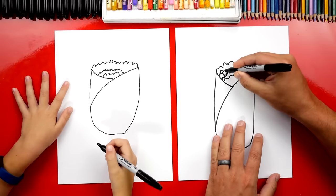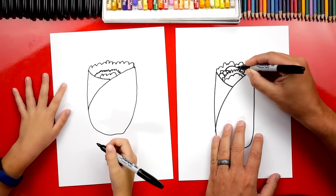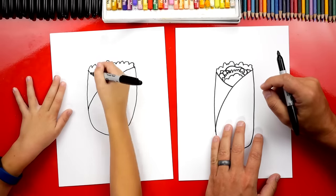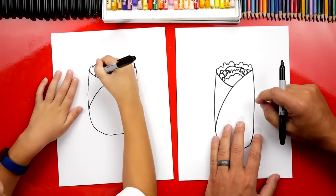I'm going to maybe add another curve right here that looks like this for the sour cream. Wait, I haven't even done the tomatoes yet. Oh okay, you better start.